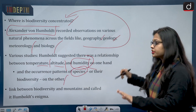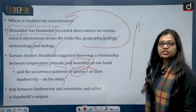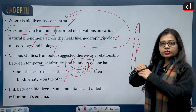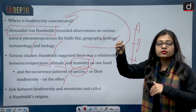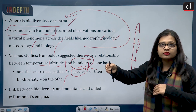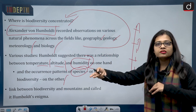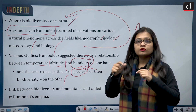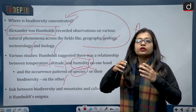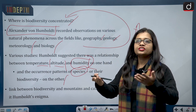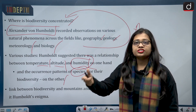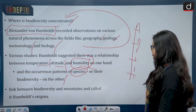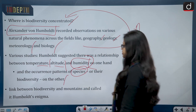For example, as one moves upward, at each passing stage the altitude increases, the temperature decreases, and the level of humidity and moisture also changes. It means that at every single level, things are varying. With every stage there is a relationship, and that relationship keeps changing. He identified this link between biodiversity and mountains and called it Humboldt's Enigma.